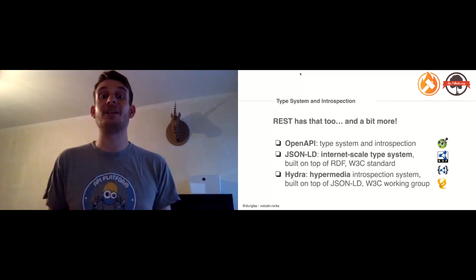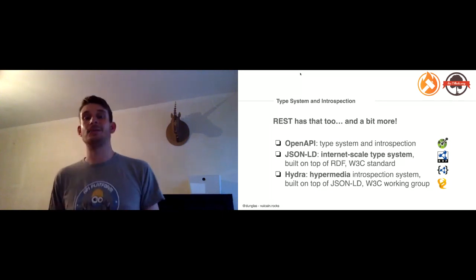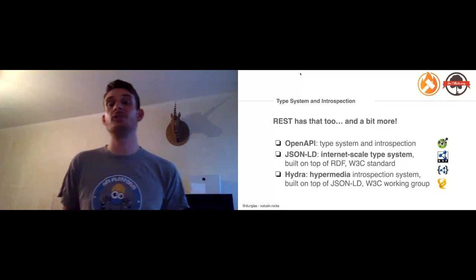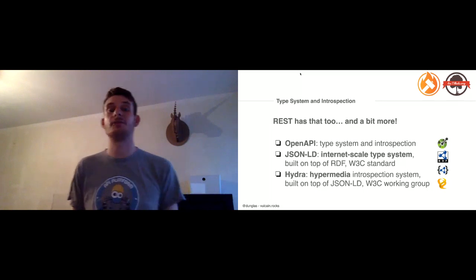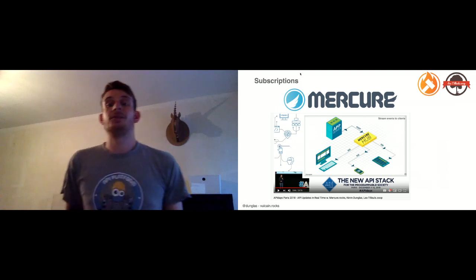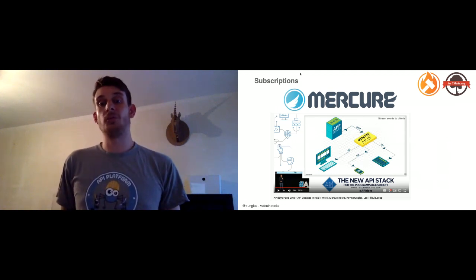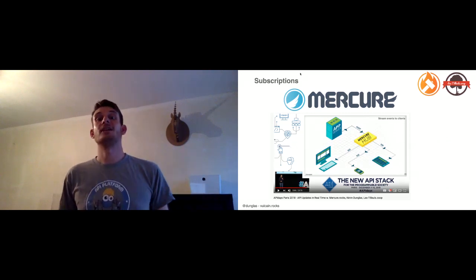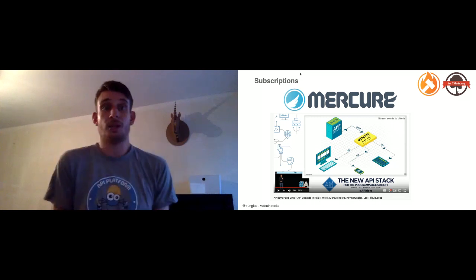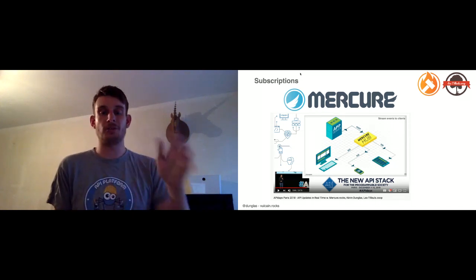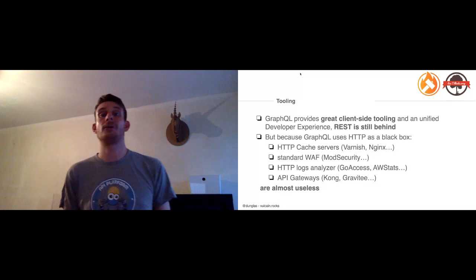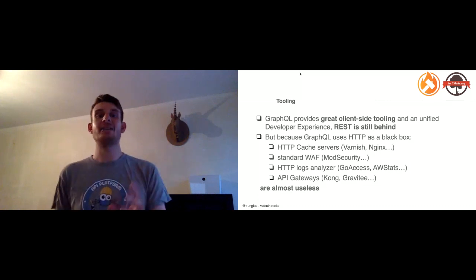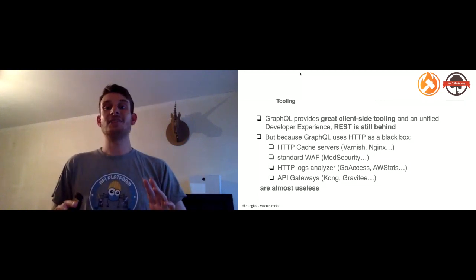GraphQL does offer more: it's also a query language with a type system, built-in introspection, subscriptions, and great tooling. Vulcain has none of that on its own, but Vulcain works alongside your REST API, and REST has tools to fill those gaps. REST has OpenAPI (Swagger), a rich type system through JSON-LD and Hydra under the W3C, and a hypermedia introspection system also under the W3C umbrella.